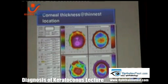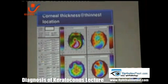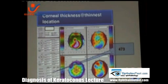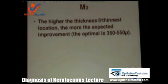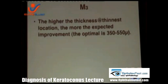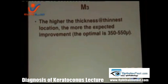Regarding corneal thickness, when we have a very thin cornea, we shouldn't touch it with intracorneal rings, and the results will be much better in a thicker cornea. The thinnest location optimal range is between 350 and 550 microns. Below this, it is better to do DALK. Above this, the response of the cornea towards the intracorneal rings is also not good because of the high viscous diseased tissue.